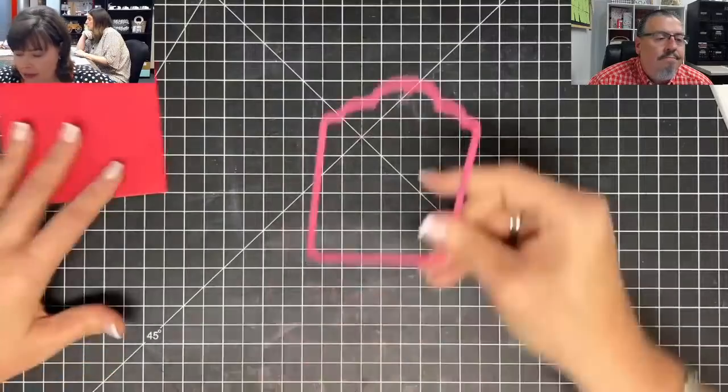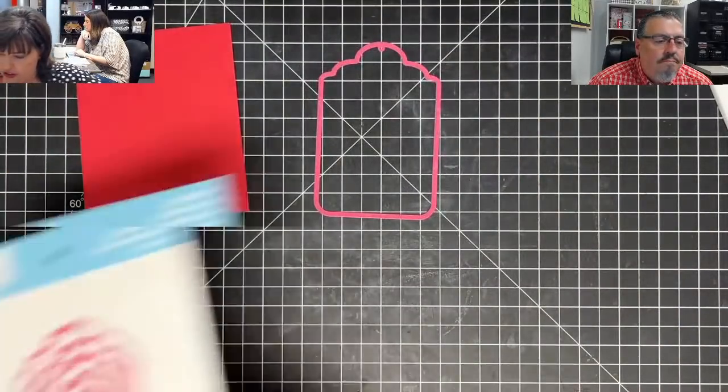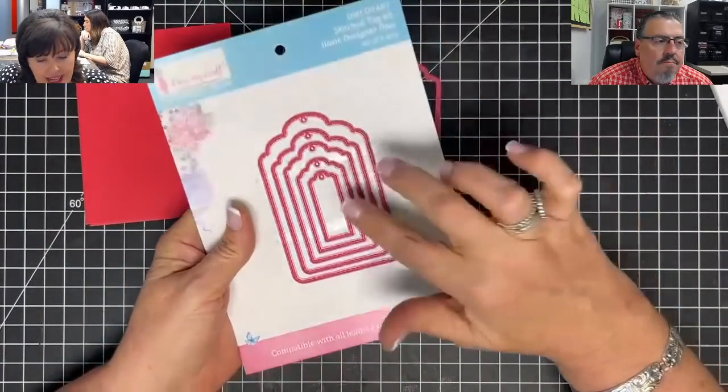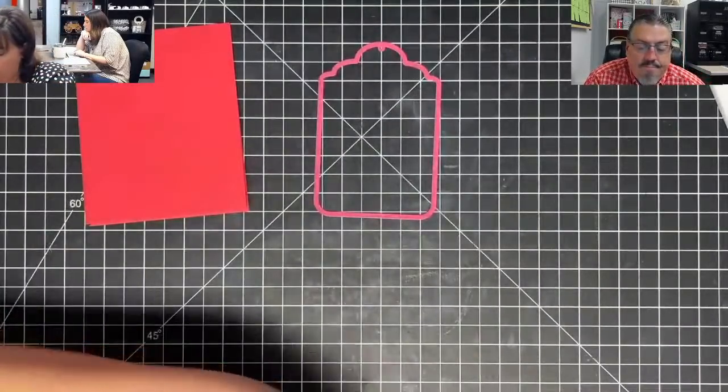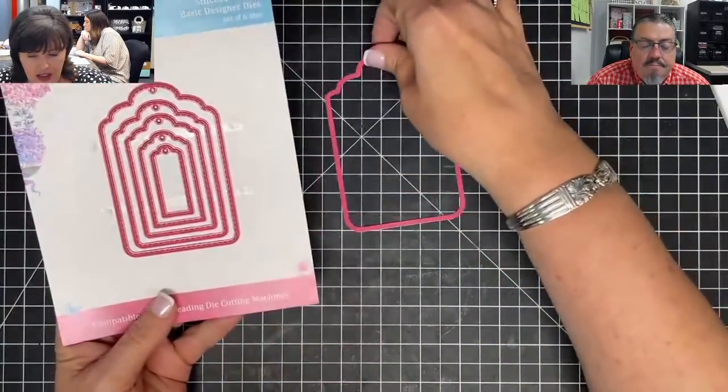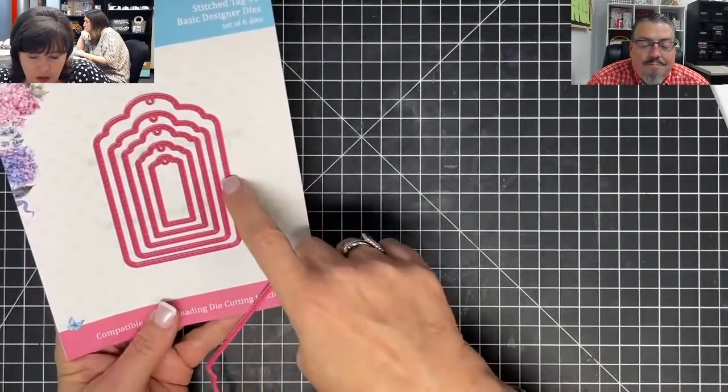So this is creating our gusseted bottom. See how I've got that little bottom down there? That's what we're creating. Now you want to take your die. The die I'm using is the nested stitch tag number 3 dies is what I'm using. And I'm using two dies from it. I'm using the biggest one and the next one.